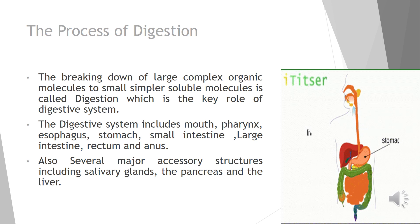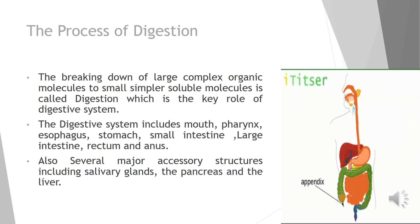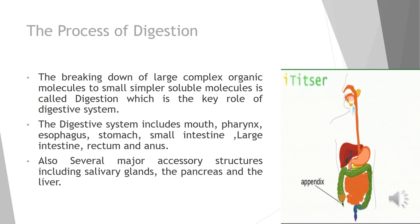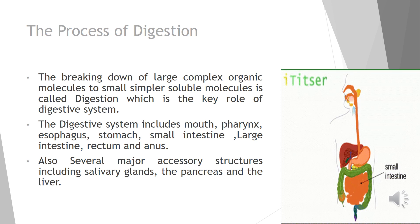What do we mean by complex organic molecules? For example, polysaccharides cannot be absorbed by the human digestive system, so they should be broken down into smaller simpler soluble substances like glucose. This whole process of breaking down complex organic molecules into simple soluble substances is called digestion, and this is the main key role of the digestive system.